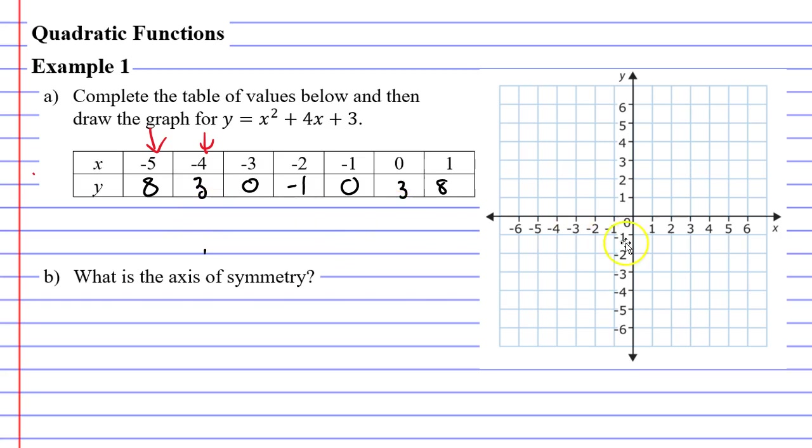Now I want to plot these points on my Cartesian plane. Now you'll notice in the first column here with x is negative 5, y is 8. And y doesn't get as high as 8 on my Cartesian plane. So all I'm going to do is just ignore that column, at least for now, and go to the next column.